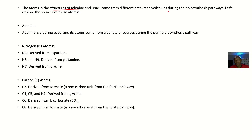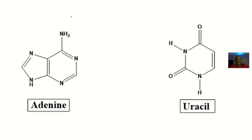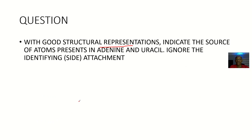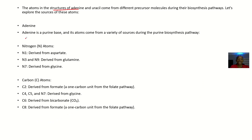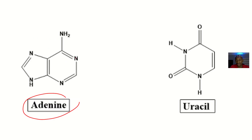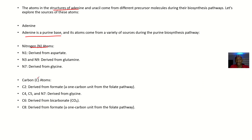Everyone watching this video should know how to draw adenine because the question asks for structural representation — so you must draw adenine and uracil before you start discussing them. Adenine is a purine base; its atoms come from a variety of sources during the purine biosynthesis pathway. For the nitrogen atoms: N1 is derived from aspartate, N3 and N9 are derived from glutamine. Draw it and follow along — N7 is derived from glycine.